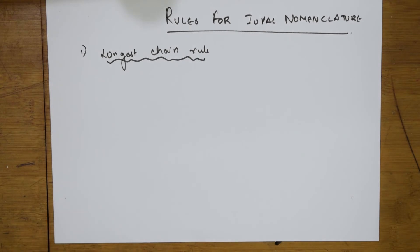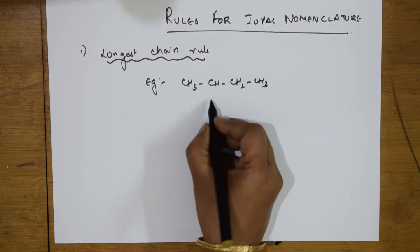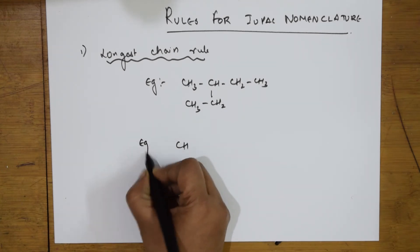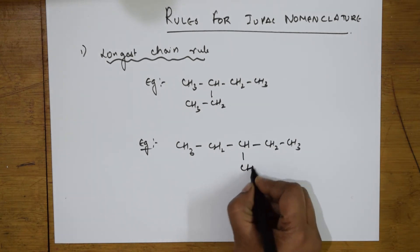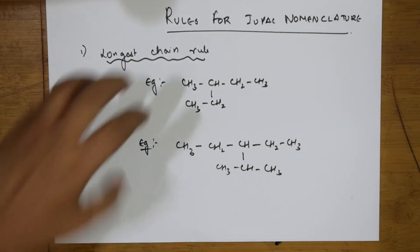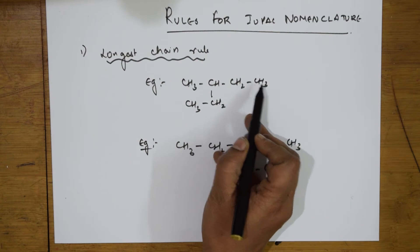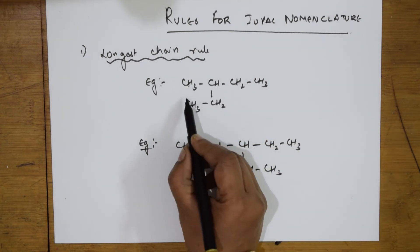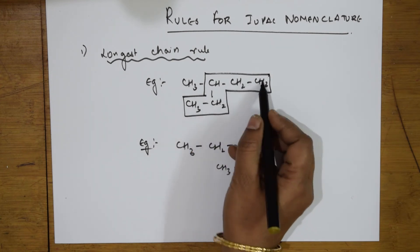What is this longest chain rule? Suppose if I have an example: CH3-CH-CH2-CH3 with a substituent CH2CH3. Now I have a confusion — where to take the longest chain? If I take this chain, it is 1, 2, 3, 4 only. But if I take from another direction, I get 1, 2, 3, 4, 5. So that becomes a longer chain.